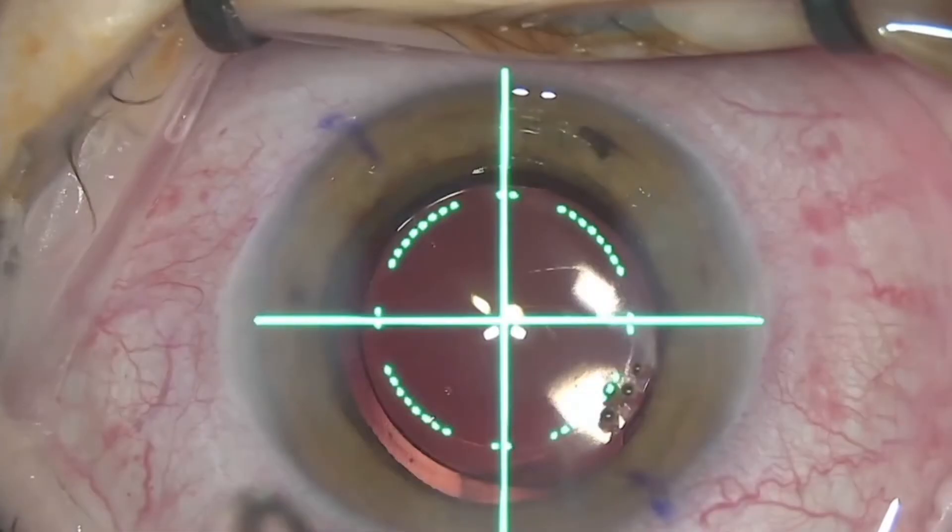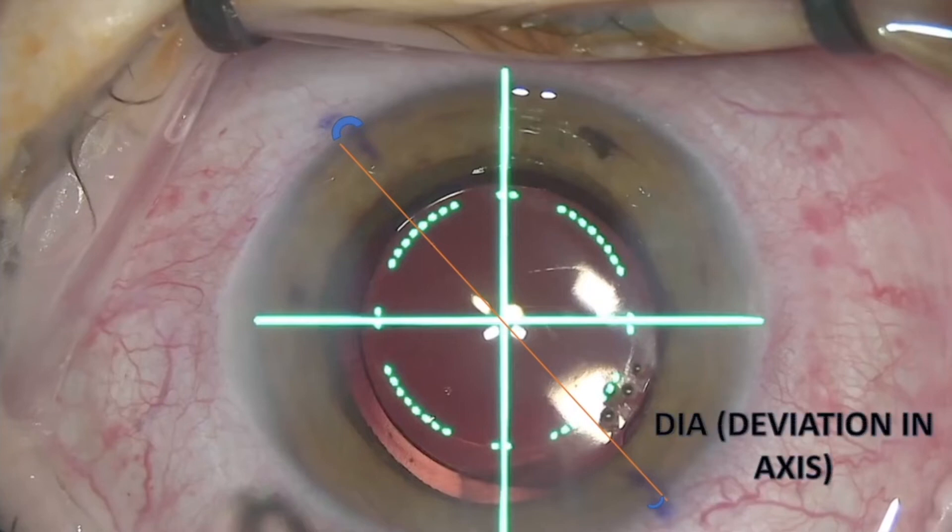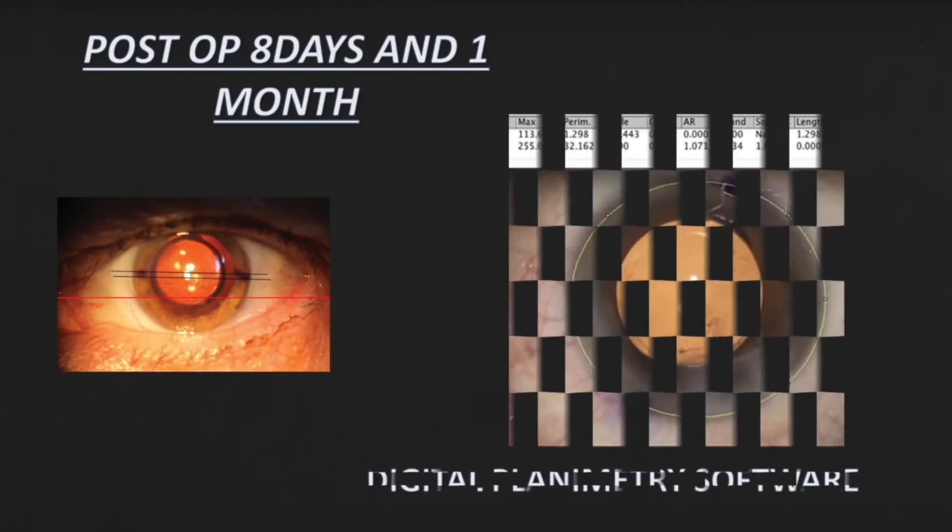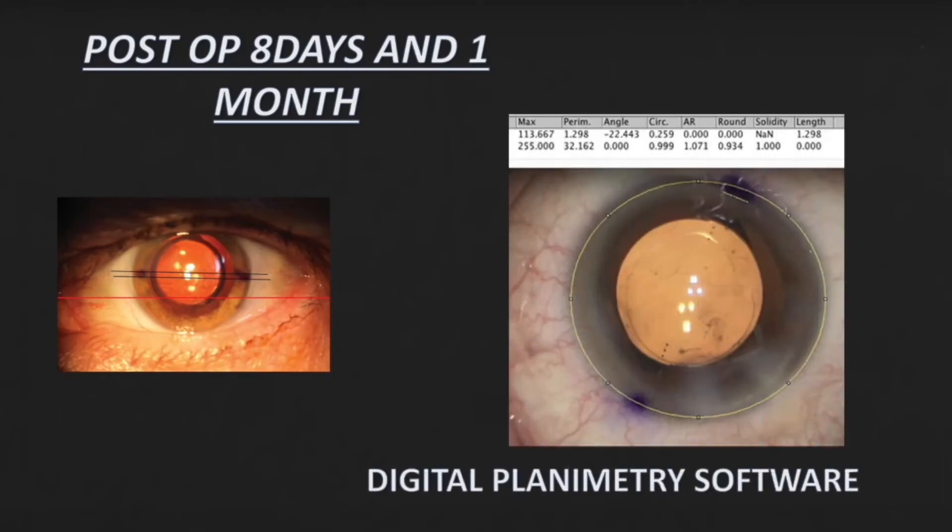To make sure to take a deviation in axis, which is the difference between the degree that is marked preoperatively and the axis shown by the Verion. We further did this on postop day 8 and postop day one month and performed a complete analysis.